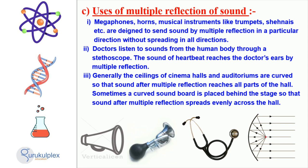In movie theaters and auditoriums, the ceilings are usually curved to guarantee sound, with multiple reflection, reaches all sections of the hall. A curved soundboard is also sometimes placed behind the stage to distribute sound uniformly throughout a hall through multiple reflection.